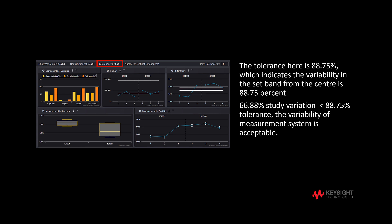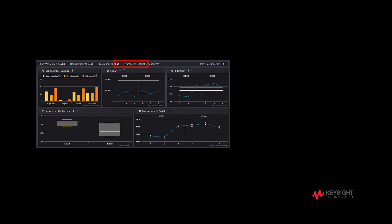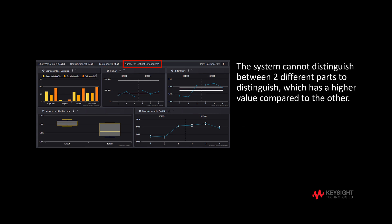Thus, the measurement system variability is acceptable. The last metric is the number of distinct categories, which represents how many separate groups of parts the system can distinguish. In this case, the value is 1, which means the system cannot distinguish between two different parts.